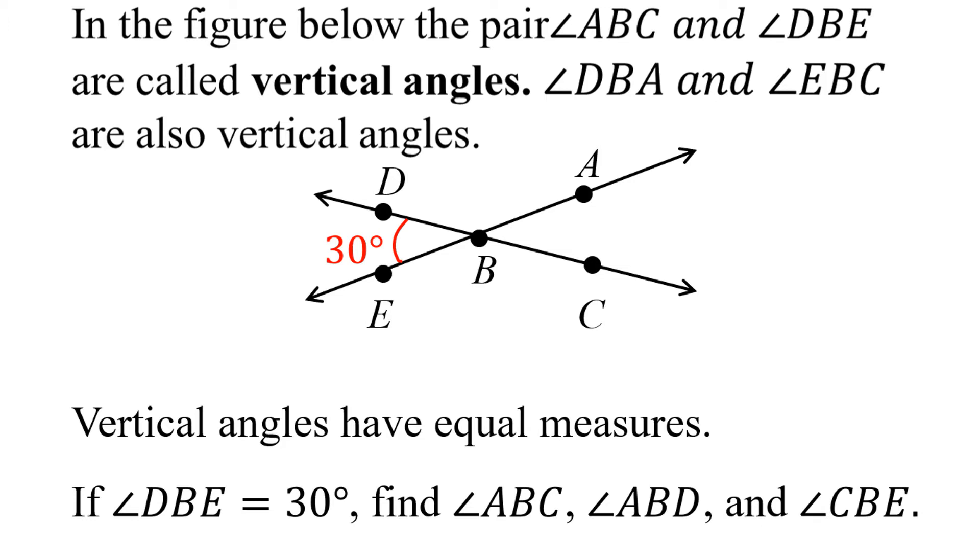Let's start with angle ABC. Angle ABC is directly across the same vertex from angle DBE, so these are vertical angles. And we know that vertical angles are equal, so they must both have measures of 30 degrees.